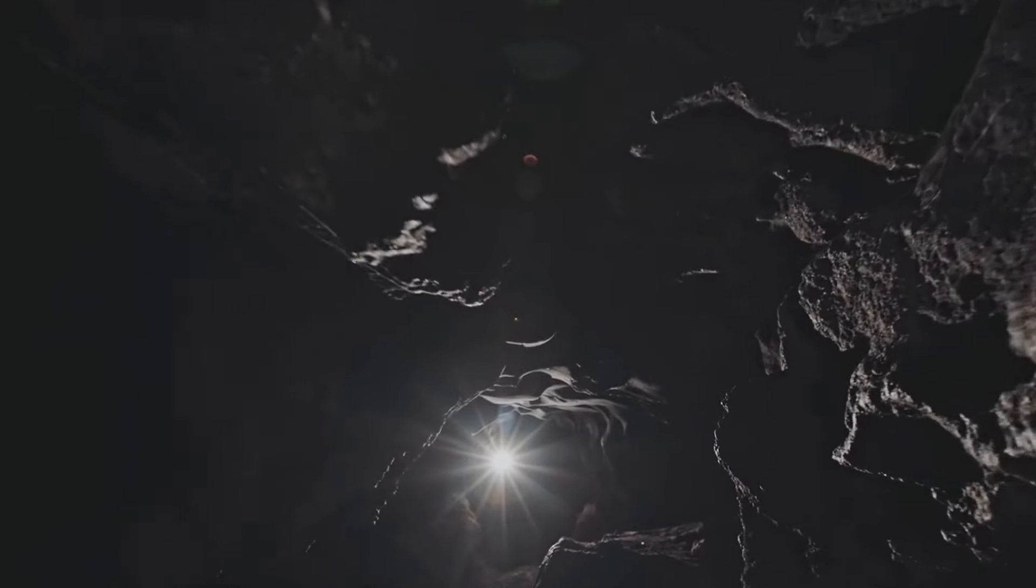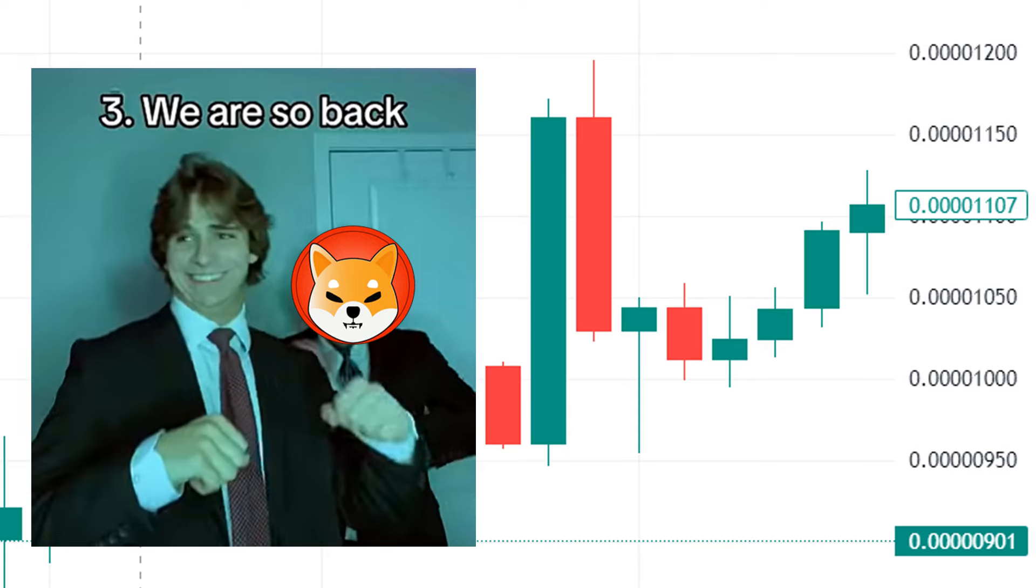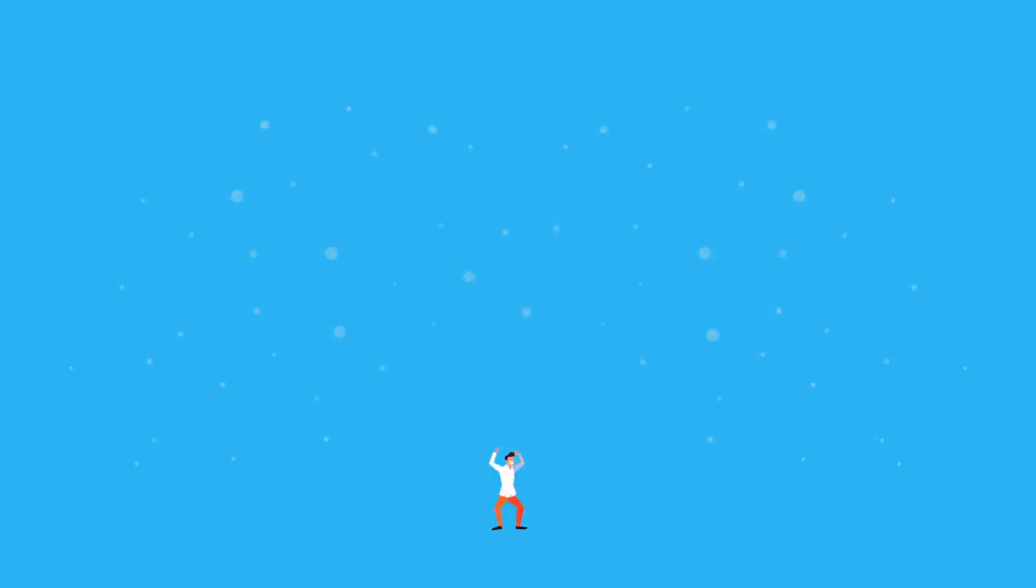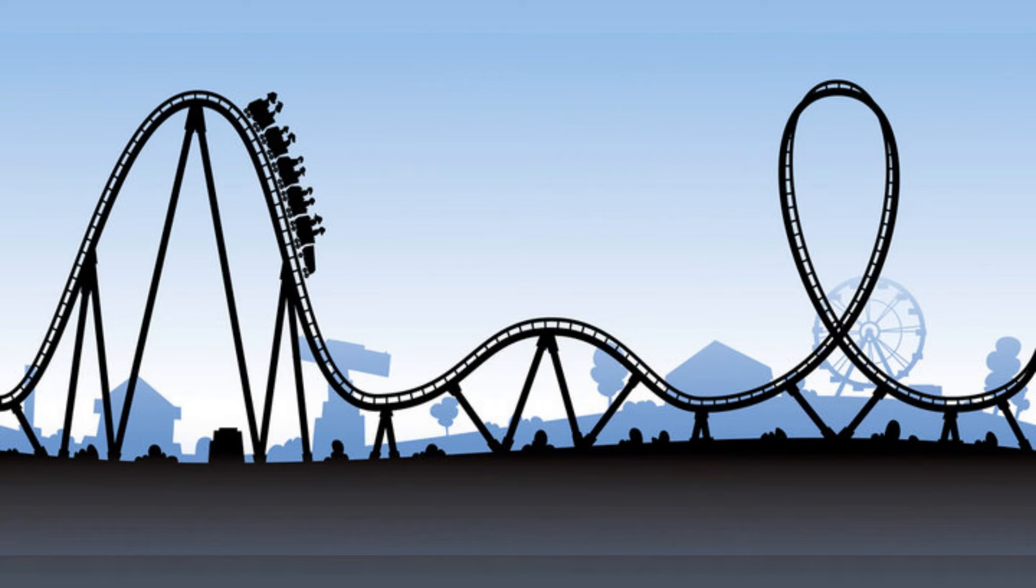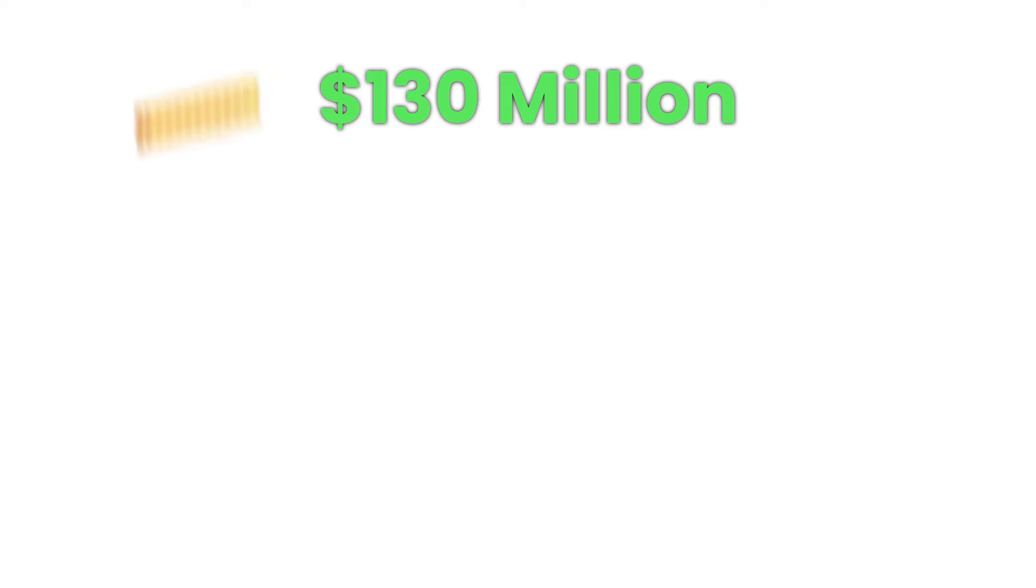Amidst this frustration, there was a glimmer of hope. Shiba Inu started a slow ascent, as if the roller coaster was finally turning around. It was a relief for the Shiba Inu community, reigniting their trust and excitement. The ride was back on track, and people were ready for the next twists and turns.